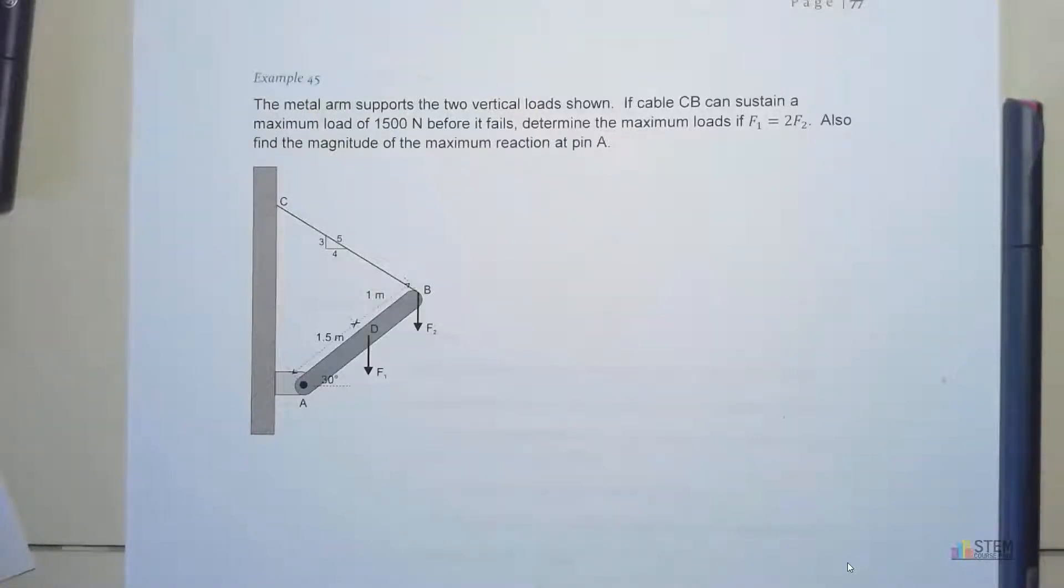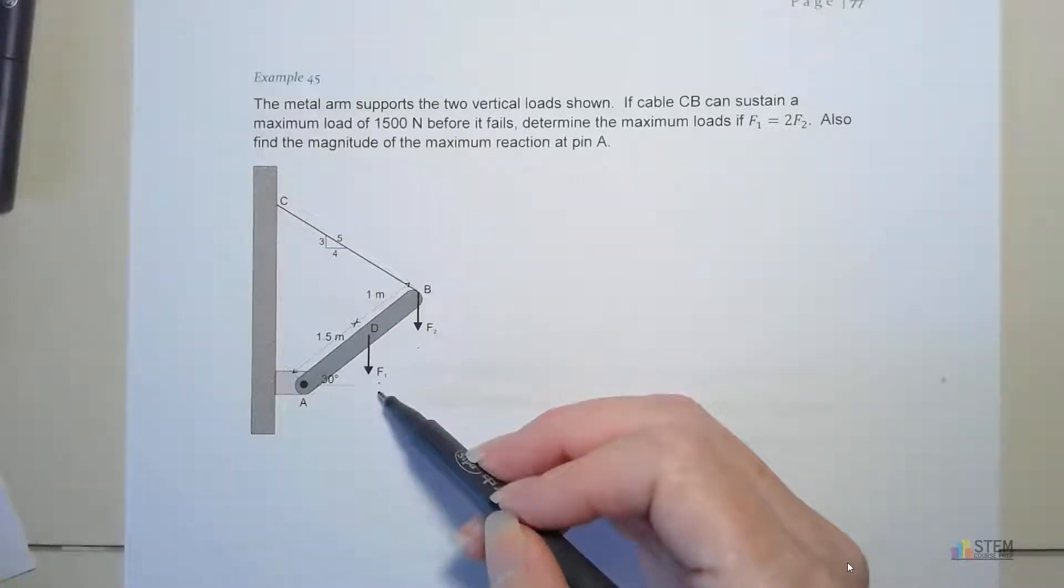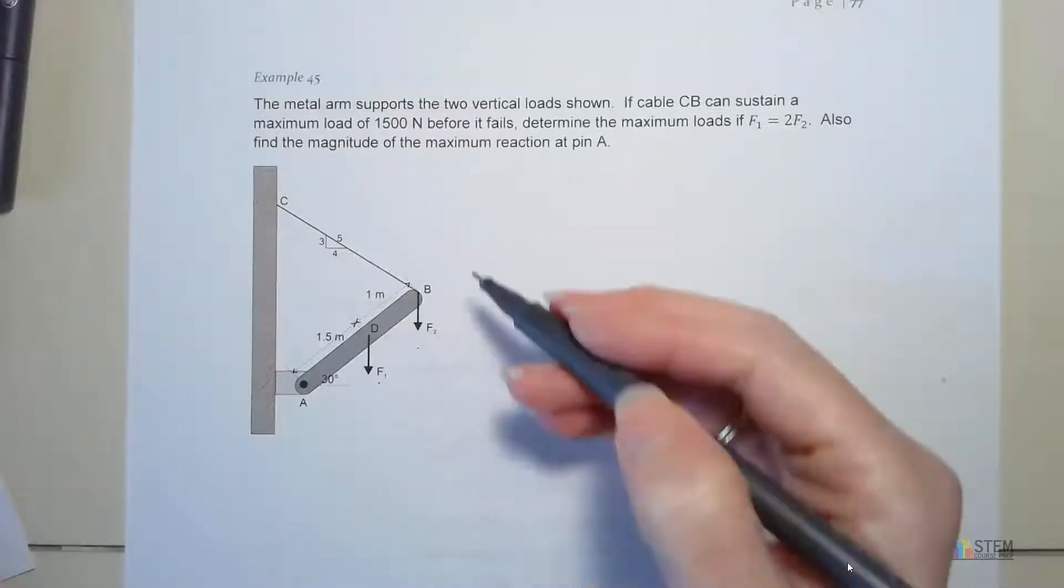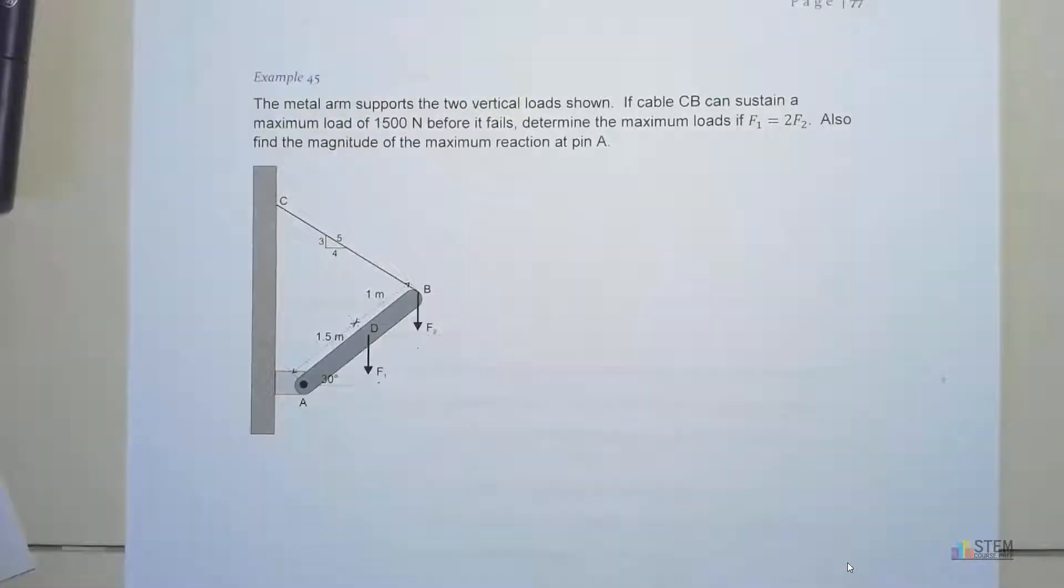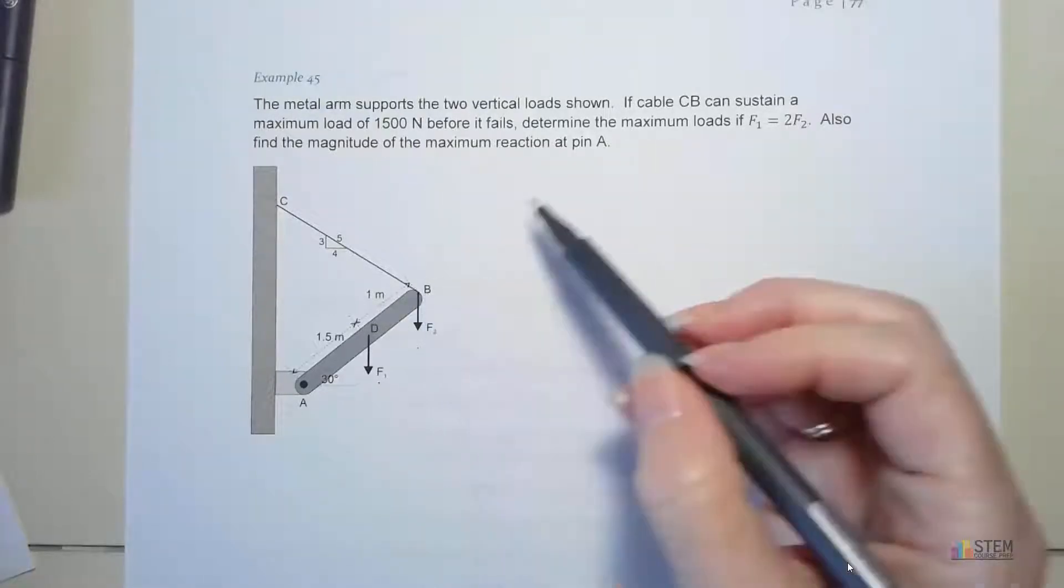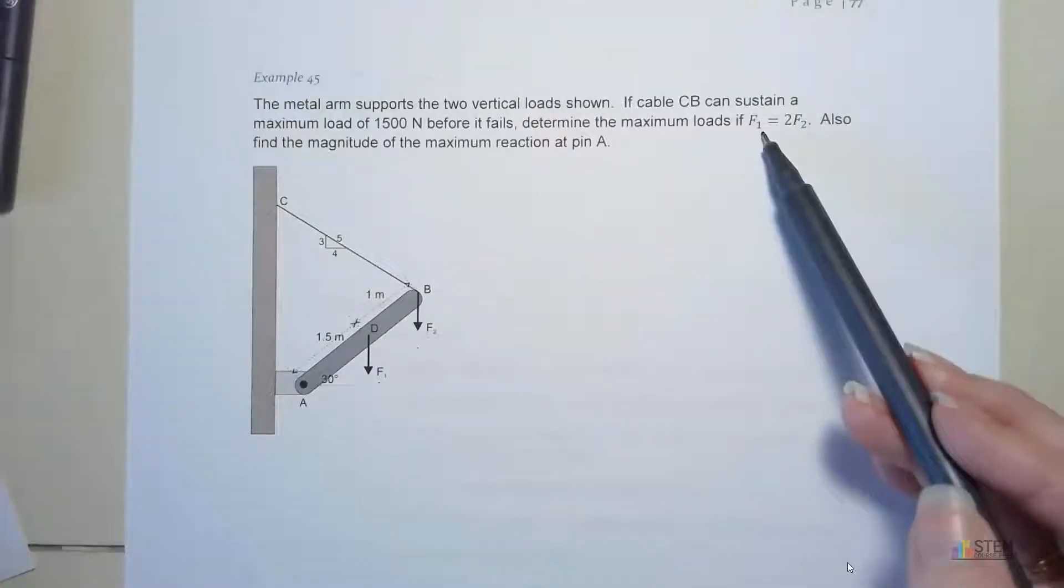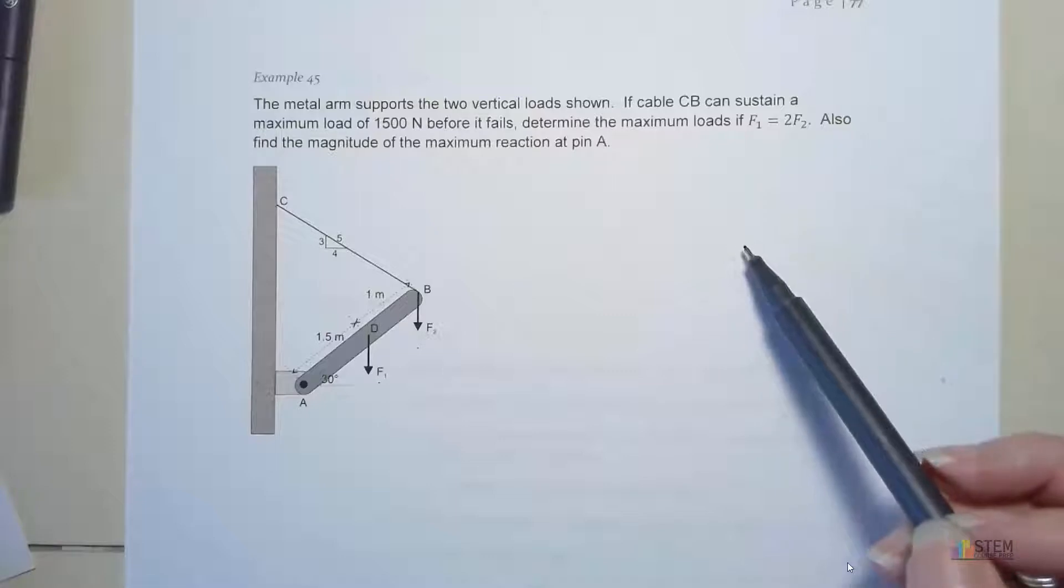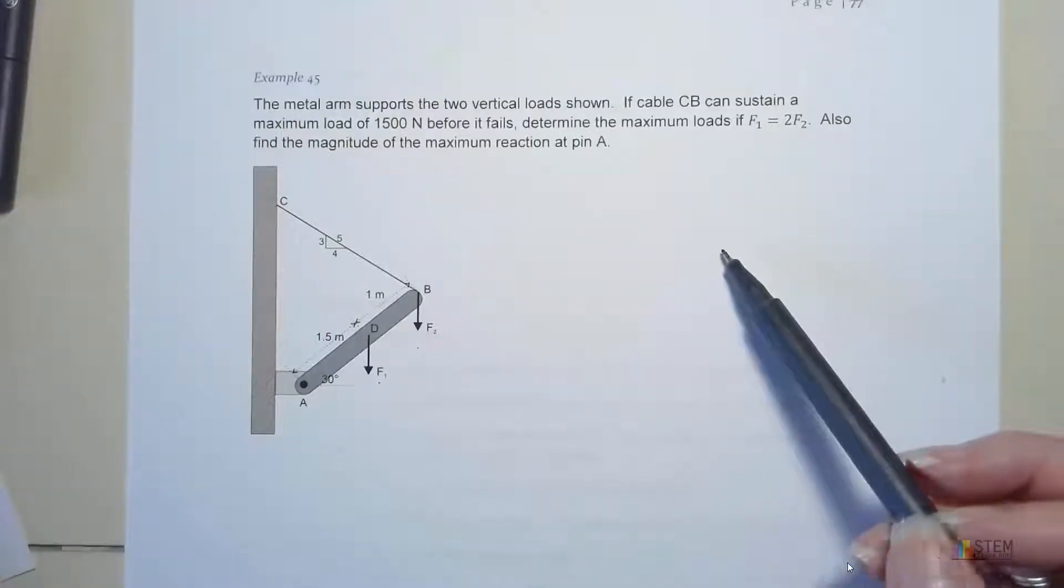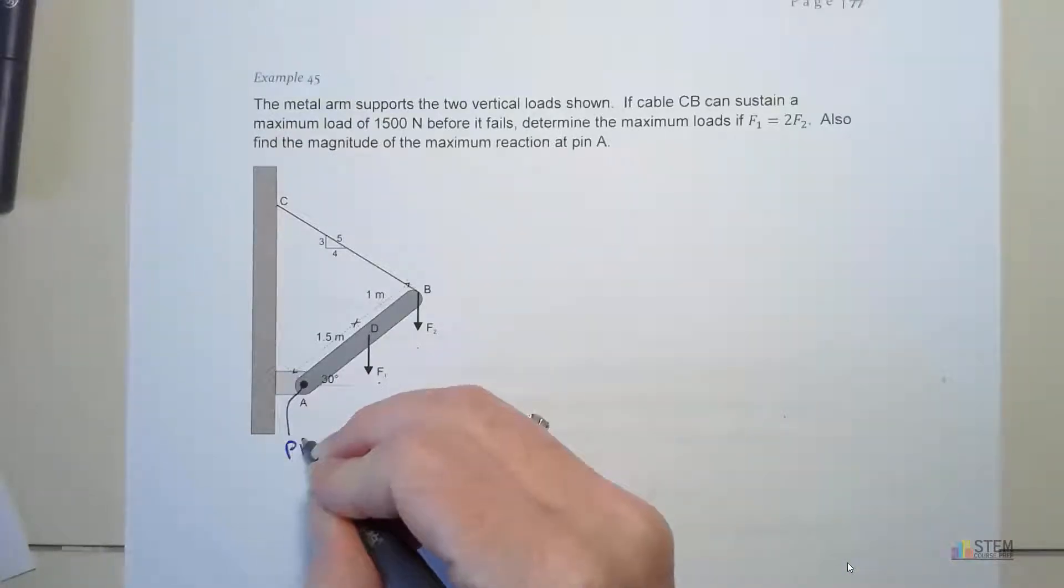Let's do one more example of these 2D rigid body problems before we move into 3D equilibrium. Here we've got a metal arm that supports two loads, F1 and F2. We've also got cable CB. That cable can only handle a maximum load of 1500 newtons before it fails. We want to find the maximum loads for F1 and F2 if F1 is double the load of F2. We're also going to find the magnitude of the max reaction at pin A.